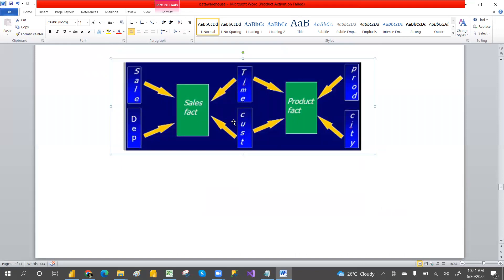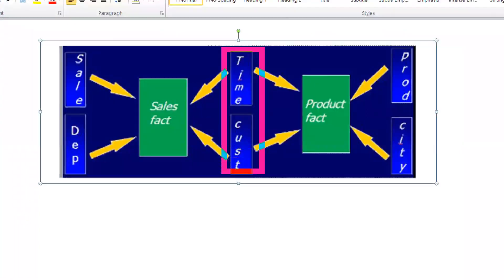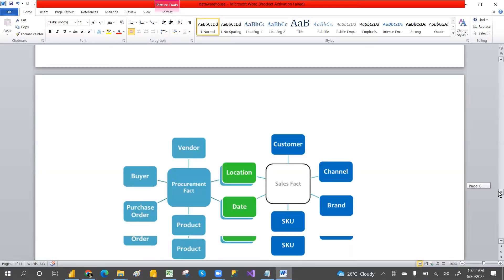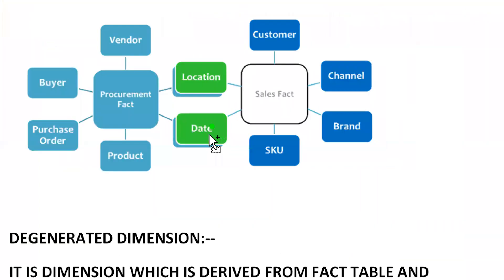Also, if you have a sales fact table and a product fact table, the time and customer tables are conform dimensions. Similarly, in two schemas shown here, location and date are conform dimensions — tables created once and used across multiple projects.